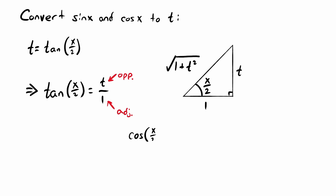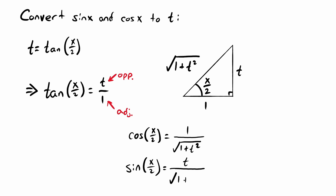From the triangle, cosine of x over 2 equals adjacent over hypotenuse, which gives us 1 divided by the square root of 1 plus t squared. Similarly, sine of x over 2 is opposite over hypotenuse, which comes out to t divided by the square root of 1 plus t squared. However, this is not what we want — we're trying to convert sine of x and cosine of x to t, but right now we have sine and cosine of x over 2. We'll finish this conversion using double angle identities.